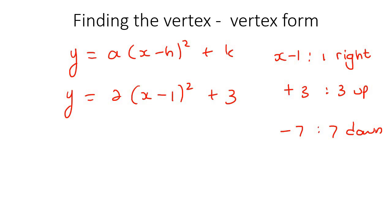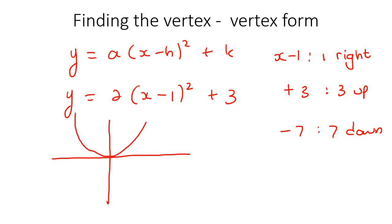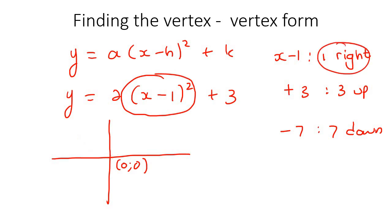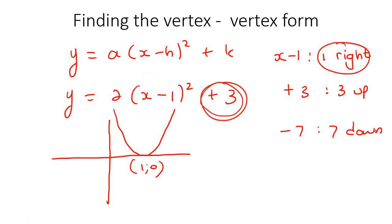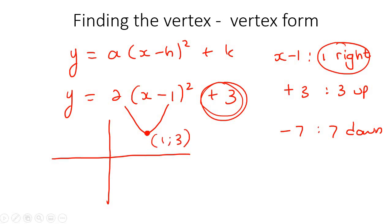The most basic parabola you could ever get always has a vertex at the coordinate (0, 0). Then when you have something like (x minus 1) squared plus 3, we said that moves it one place to the right — so the x value is now 1 — and then three places up. So the vertex would now be at (1, 3). That is the coordinate of your vertex.